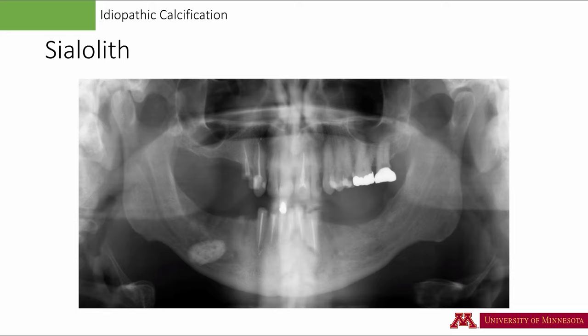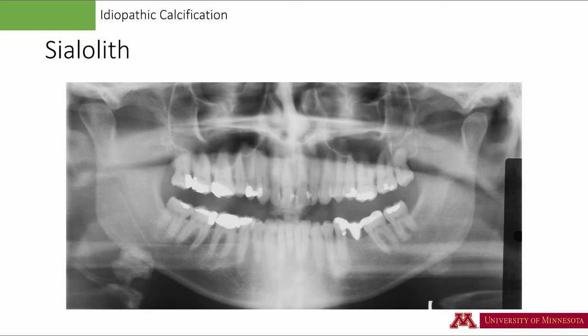A sialolith is usually a well-defined, uniformly dense radiopacity superimposed over the inferior border of the mandible. Since part of this radiopacity is outside the border of the mandible, we can rule out dense bone island or idiopathic osteosclerosis that occurs inside the bone. Occasionally, a sialolith may be completely superimposed over the mandible. To rule out a dense bone island, a periapical or an occlusal radiograph may be obtained. If this is a sialolith, it will probably not be recorded on a periapical radiograph. An occlusal radiograph should show this radiopacity on the lingual aspect of the mandible. Unlike a lymph node calcification which appears like a cauliflower, the margin of the sialolith is usually smooth.